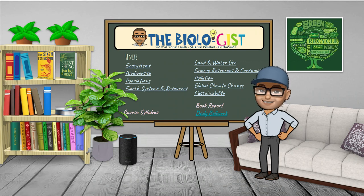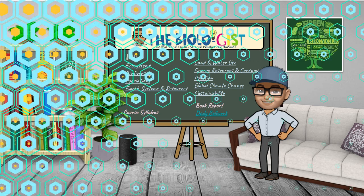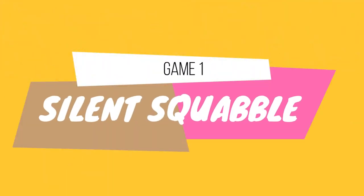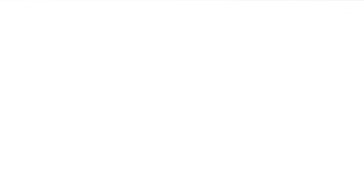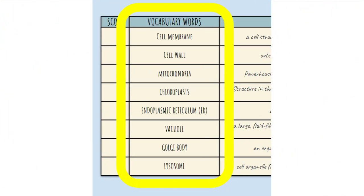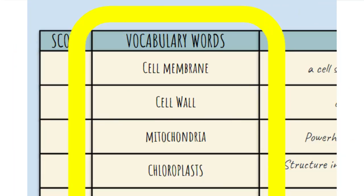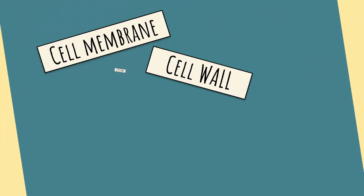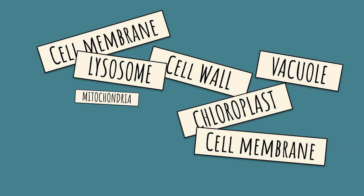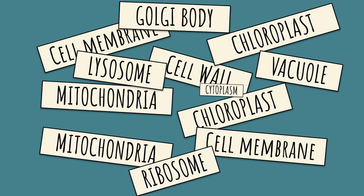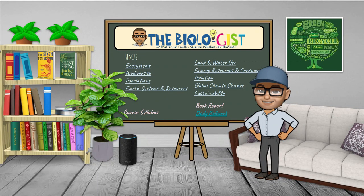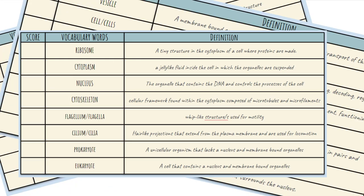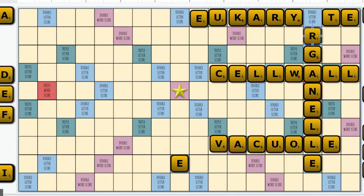So without further ado, our first game for this episode — and since it's not totally the same rules as the actual Scrabble game, we will call it Silent Squabble. The activity begins with students completing a vocabulary table by filling in the first column with the correct word for each definition or description. You have the option to require students to complete all words, or for them to fill in 10 to 20 words.